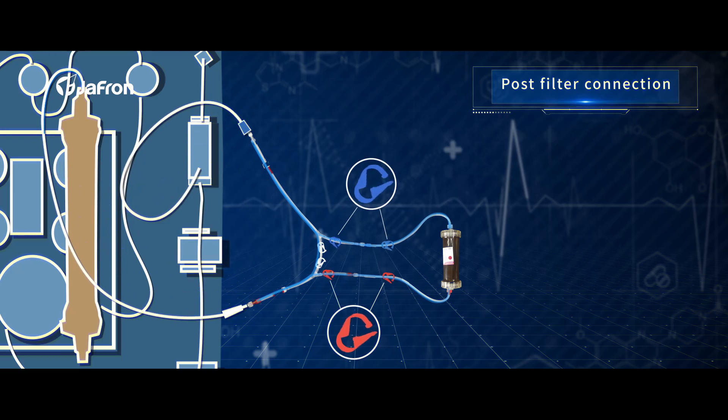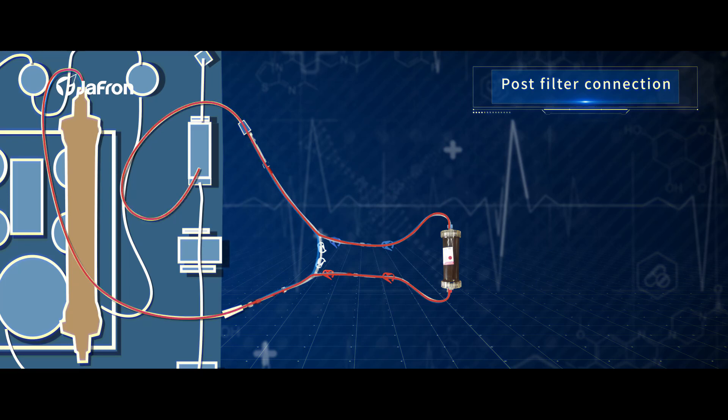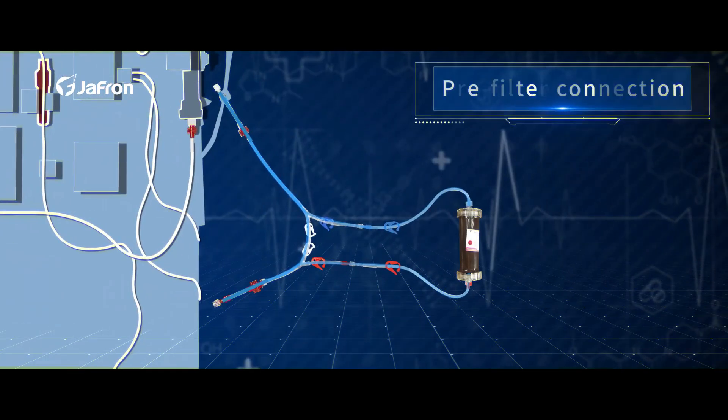Start the treatment. Pre-filter connection: Connect the HA cartridge with the treatment part of the integrated bloodline set before the filter on the CRRT machine. Temporarily stop CRRT treatment.